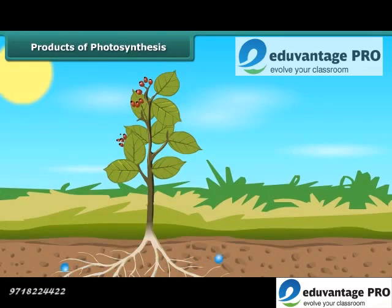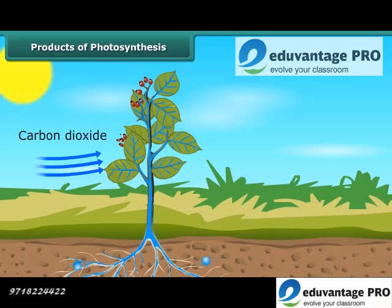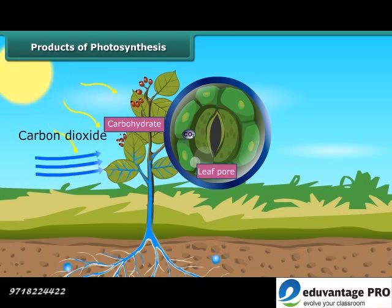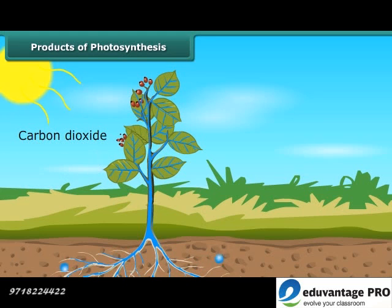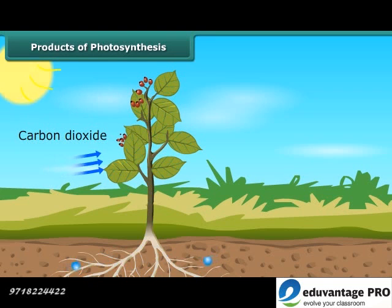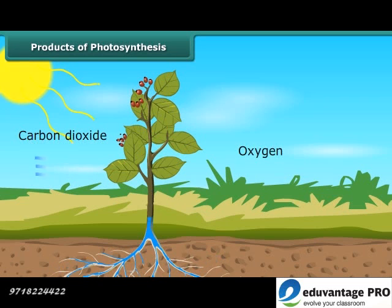After reaching the leaves, carbon dioxide and water react in the presence of sunlight to form carbohydrate. The carbohydrate is ultimately converted into starch, which gets stored in different parts of the plants. Therefore, the first food product formed during photosynthesis is starch, which is also an example of carbohydrate. In this process, oxygen is also released.